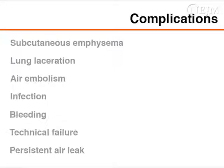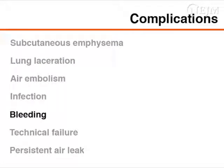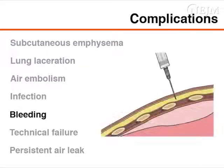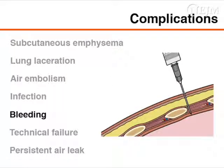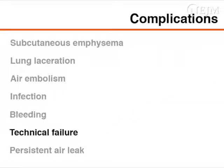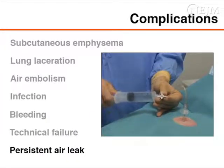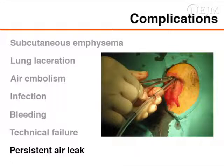Minor complications from needle aspiration of primary spontaneous pneumothorax include localized subcutaneous emphysema. Although serious complications are rare, lung laceration, air embolism, infection, or bleeding may occur. You can minimize the risk of bleeding by placing the catheter at the intercostal space just above the third rib, thereby preventing injuries to the intercostal vessels. Technical failure may occur if you cannot reach the pleural space — for instance, if the catheter is too short — most often in patients who are very muscular or obese. Aspiration of more than 2.5 litres of air can indicate a persistent air leak, in which case consider the placement of a chest tube.